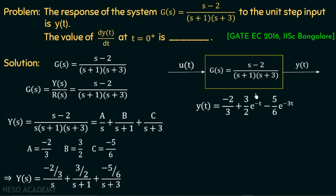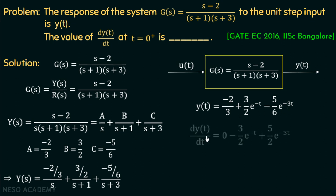Now we differentiate y(t) to find dy/dt. The constant -2/3 becomes 0. The derivative of (3/2)e^(-t) is -(3/2)e^(-t). The derivative of -(5/6)e^(-3t) is +(5/2)e^(-3t). So dy/dt = -(3/2)e^(-t) + (5/2)e^(-3t).